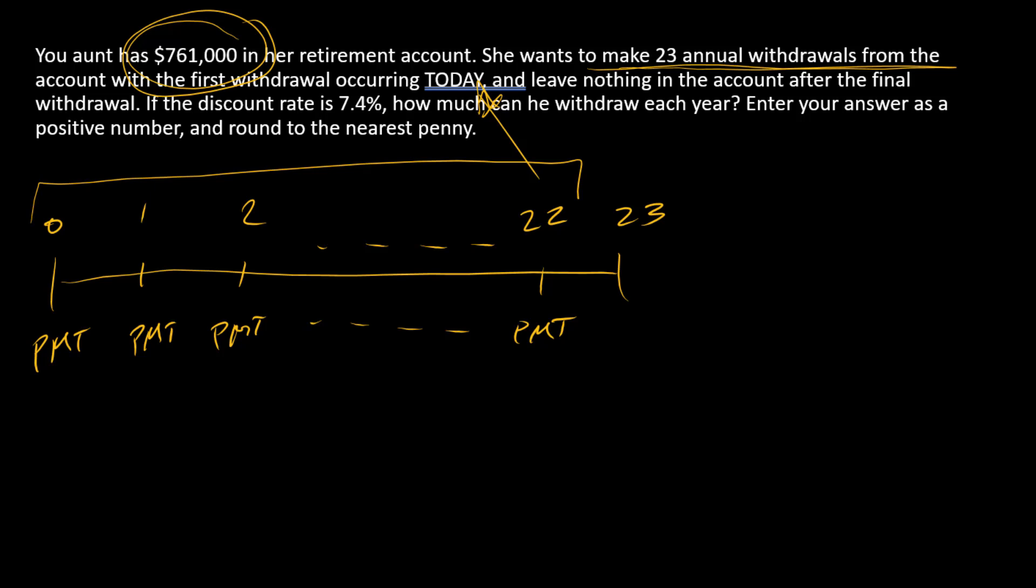We also know that right now, so PV at time zero, this retirement account is worth $761,000. And so here we're just trying to find the payment.